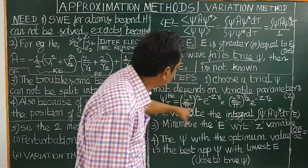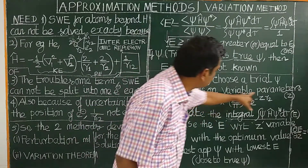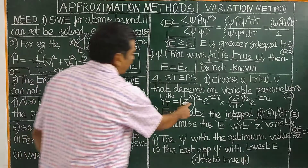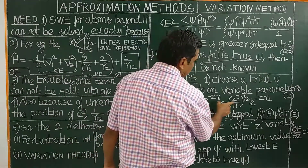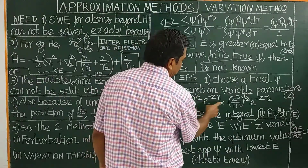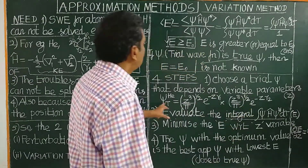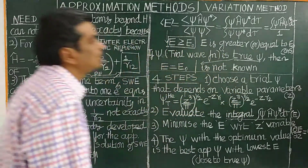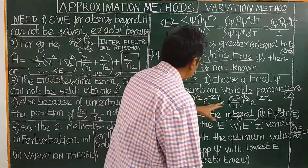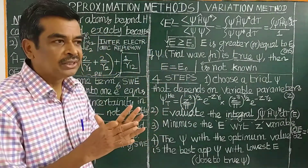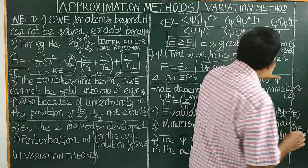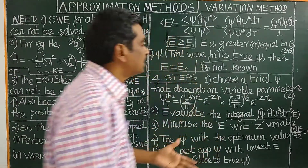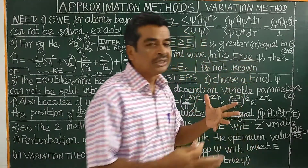The wave function of the 1s orbital of hydrogen atom is used. Since there are two electrons in helium, the trial wave function is the product of two 1s orbital wave functions. This is the trial wave function of helium atom — we have used the hydrogen atom wave function. If the trial wave function equals the true wave function, then E equals E₀. In most cases, the true wave function is not known, so the energy obtained is always greater.